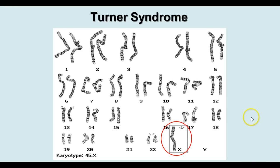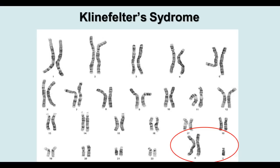Another condition is Turner syndrome, where an individual has only one X chromosome, resulting in 45 chromosomes rather than 46. Klinefelter syndrome occurs when a male has two X chromosomes and a Y, giving an extra X chromosome, with various associated symptoms. We'll do activities with karyotypes to talk about some of the conditions that can result from these chromosomal abnormalities.